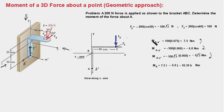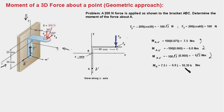Combining all three moments along the three rectangular axes, the total moment M about point A equals 7.5i − 6j − 10.39k N·m, and that is the answer.